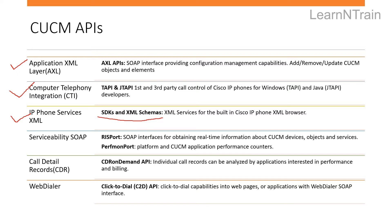Next are very important serviceability SOAP APIs. CUCM AXL APIs do not provide real-time information — for example, device registration status, extension mobility login status, or device current load information. We can use the RIS port SOAP interface to fetch this information. Next are Perfmon APIs, which are used to fetch performance counters like CPU usage and memory usage.